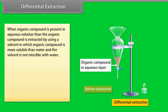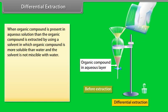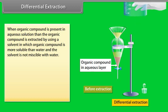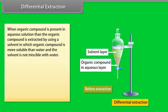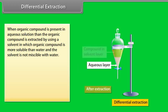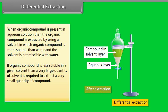Differential extraction: When an organic compound is present in aqueous solution, it is extracted by using a solvent in which the organic compound is more soluble than in water, and the solvent is not miscible with water. If the organic compound is less soluble in a given solvent, then a very large quantity of solvent is required to extract a very small quantity of the compound. This technique is known as continuous extraction.